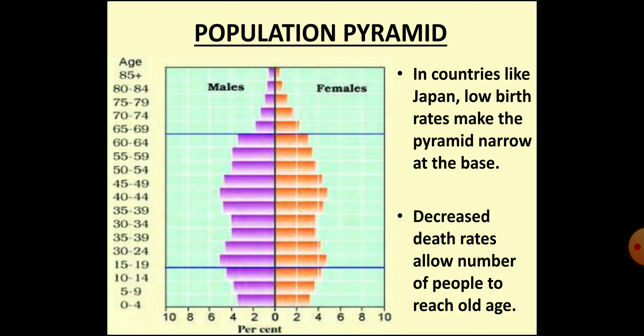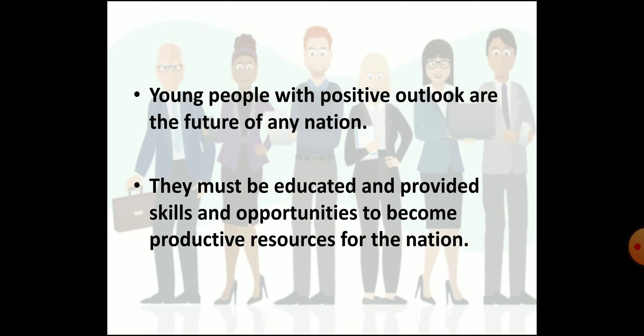Now let's focus on the population pyramid of Japan. The pyramid is narrow at the base due to low birth rates. As death rates are also low in Japan, more people reach old age. The future of any country depends on its skilled, energetic and hopeful young people. In India, we have such a resource, which can be highly productive if more investment is made in health, education and skill development.